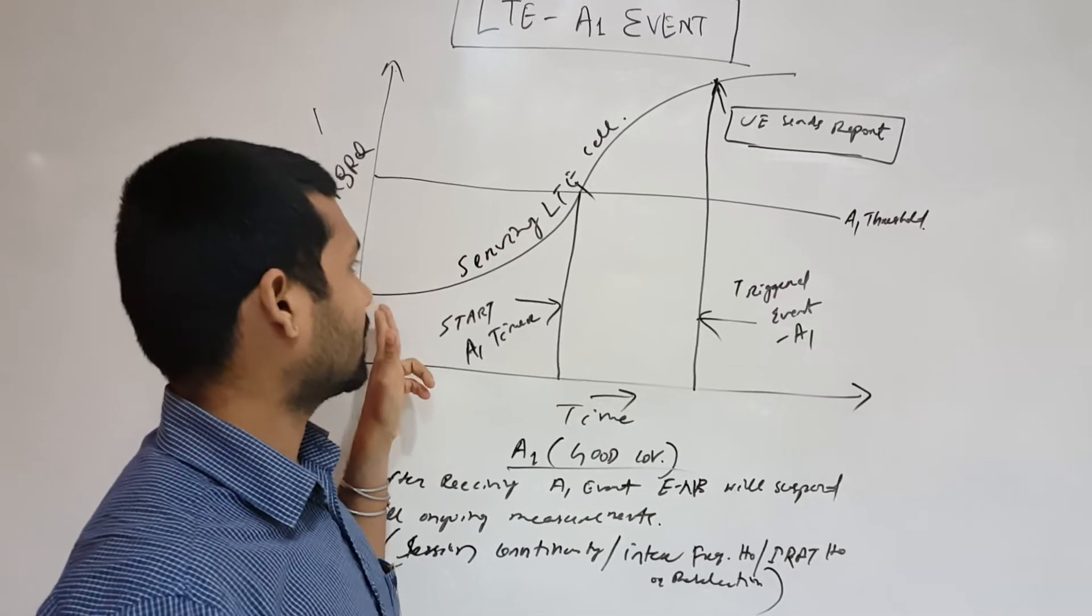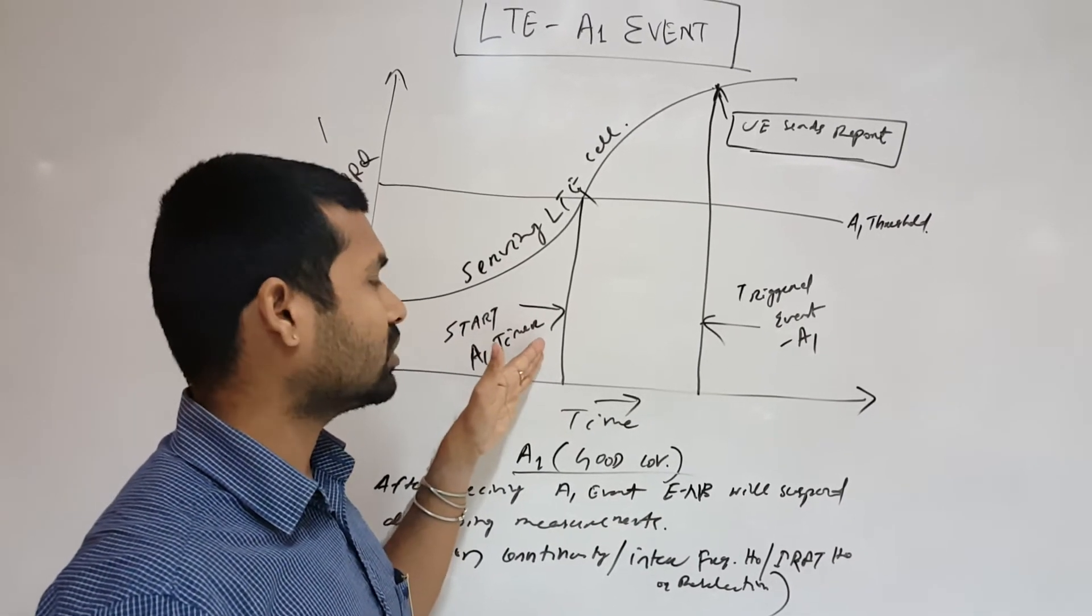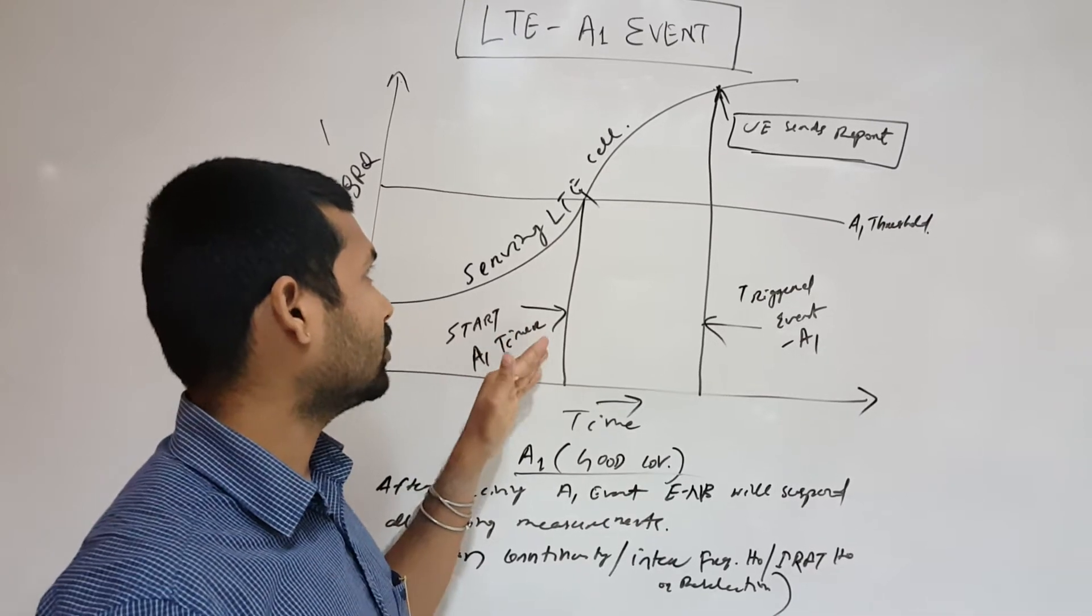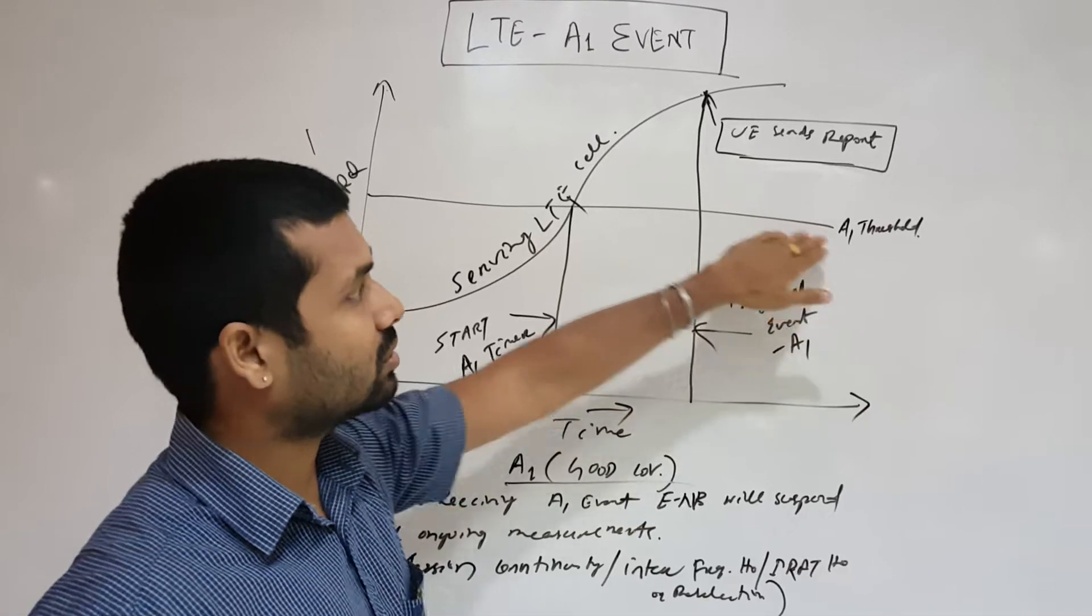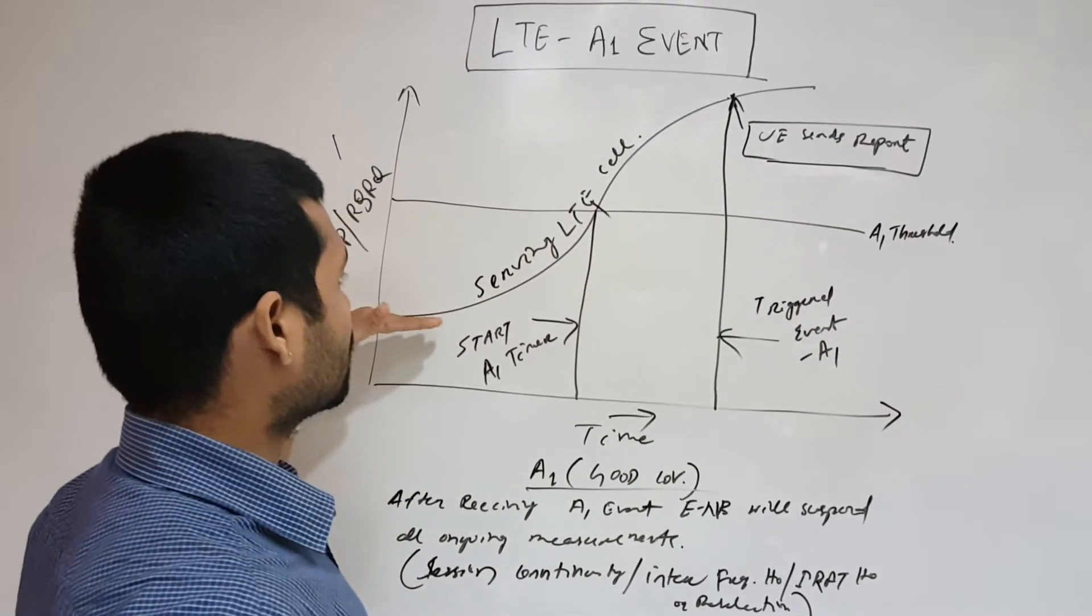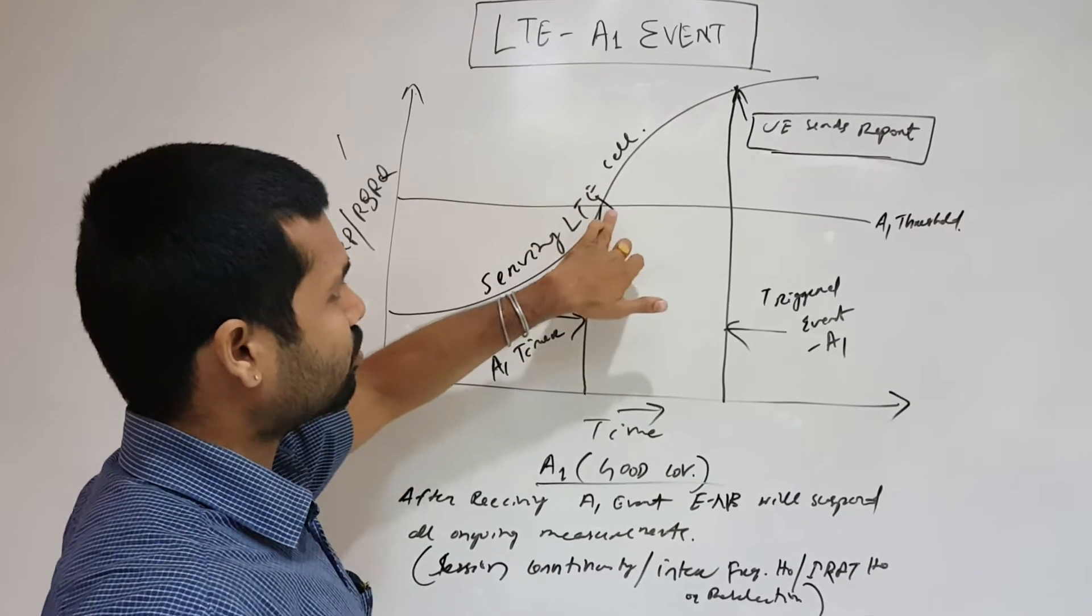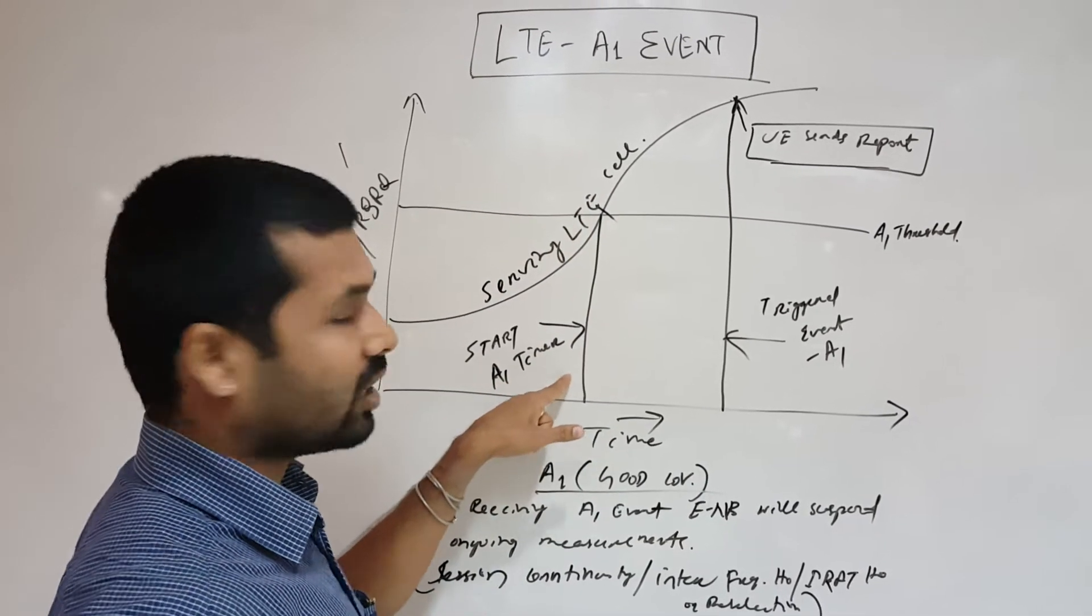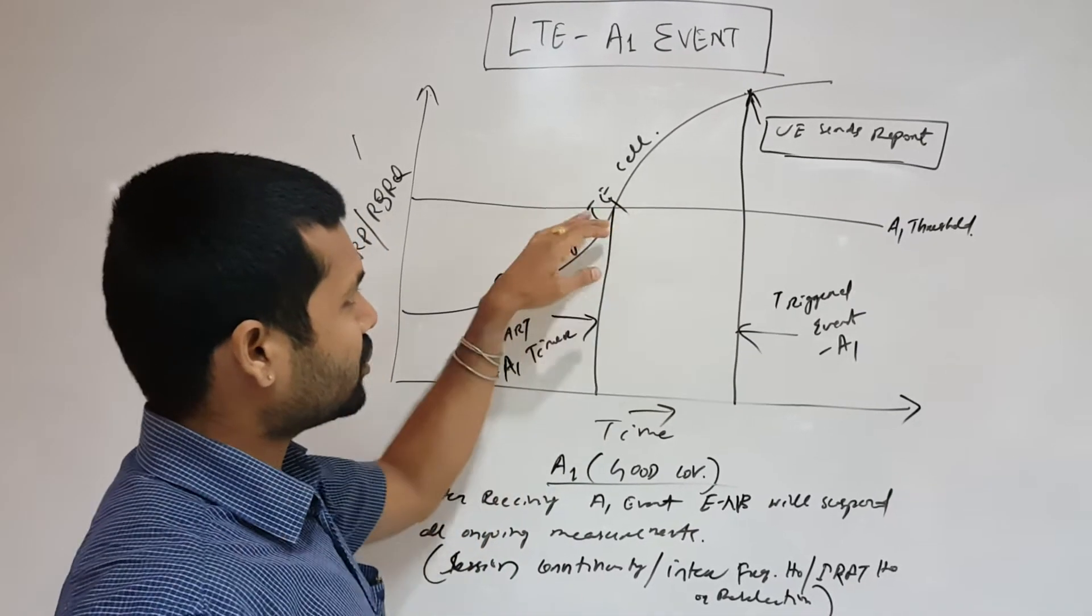So I started the A1 timer. The UE started reporting that this is the threshold for reporting A1. So this is the A1 threshold. At a certain point of time, when the coverage is becoming good, at this point of time I am starting the A1 timer. That means I am up to the threshold where the good coverage starts.